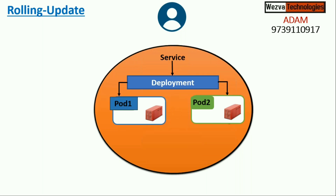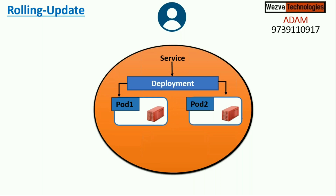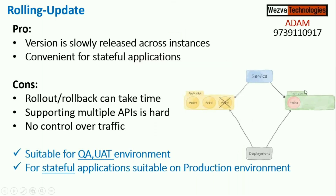Then you create the second new replica the same way, and once it is up, you delete the old second replica. This continues for however many replicas you have — in a rolling update, you create one new replica and delete the corresponding old replica. The new replica runs from the new image, while the old replica runs from the old image.